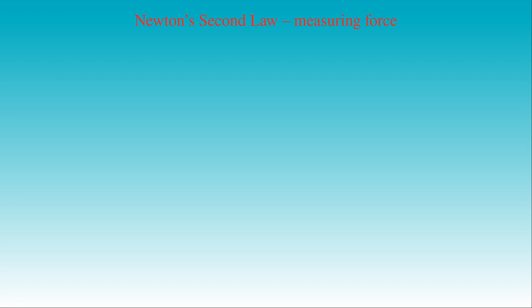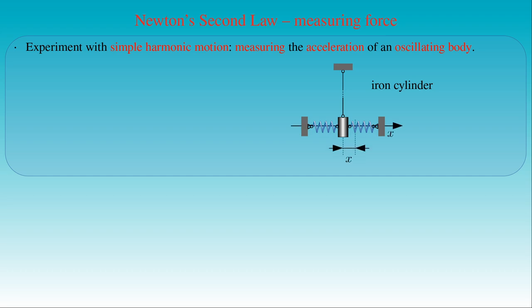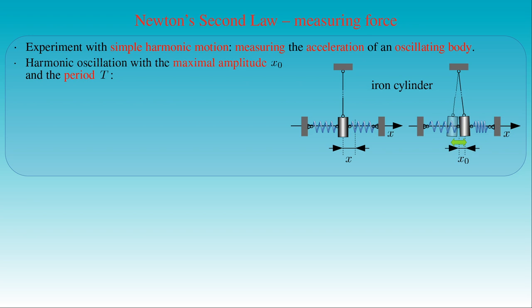In the following experiment, we use simple harmonic motion to find the exact relationship between acceleration and force. If we can measure the acceleration of a body performing oscillating motion, we can determine the exact amount of force acting on the oscillating body. In this experimental setup we suspend an iron cylinder to compensate its gravitational acceleration, and attach two springs to the body, both fixed at their other end. If we orient the x-axis along the axes of the springs with the origin at the middle of the cylinder, the cylinder is at rest at the origin and can move along the x-axis in both directions. If we move the cylinder to position x0 and release it, the body starts harmonic oscillation with maximum amplitude x0 in period T. The angular frequency omega equals 2π divided by the period T.